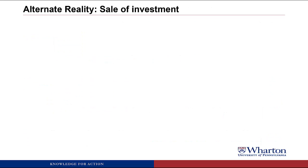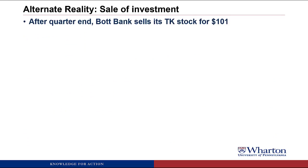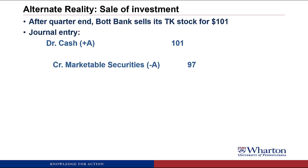Now let's sell the investment. After quarter end, BOT sells the TK stock for $101. We receive cash of 101 and take off the marketable securities at their last balance sheet date value of 97. The plug is a credit, showing up as a gain on investment of four. That gain of four shows up on the income statement and eventually works its way to stockholders' equity.